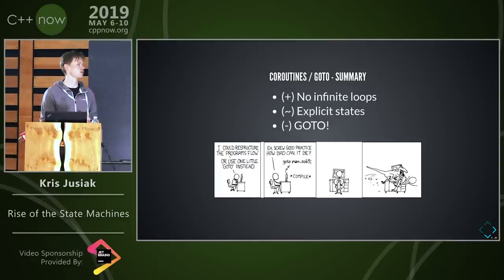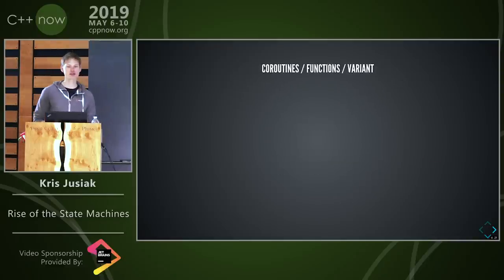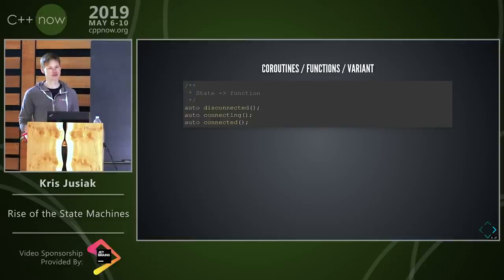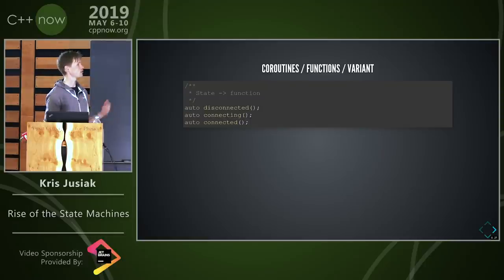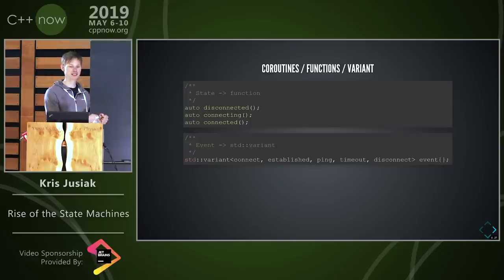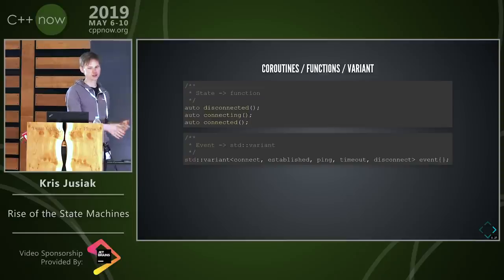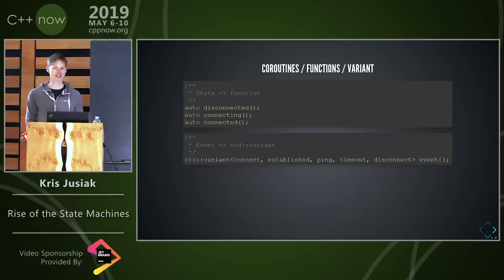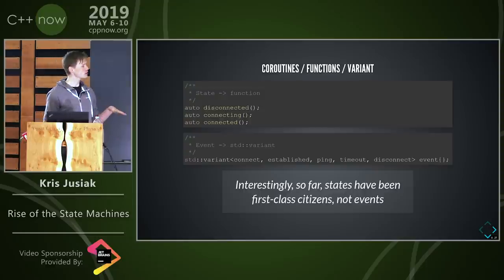Yet another extension: combining coroutines with functions and variant. The state will be a function — instead of one function with for loops or go-tos, we can have different functions representing different states. Events are represented by a variant of event types. That's a bit different from before — here states are treated as functions, which I believe is actually better than the previous solution.